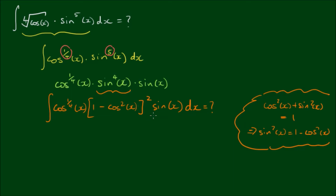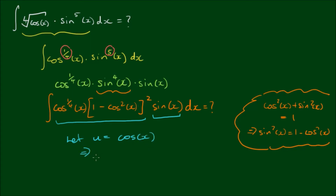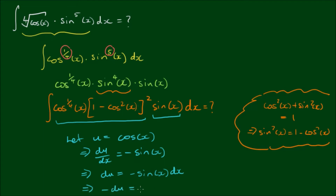To recap: we have reserved 1 sine of x here and everything else is written in terms of cosine of x. Because we've set it up like this, we can simply use a substitution. So let's let u equal cosine of x. Then differentiating, we have du/dx equals negative sine of x. Rewriting in differential terms: du equals negative sine of x dx, or negative du equals sine of x dx.